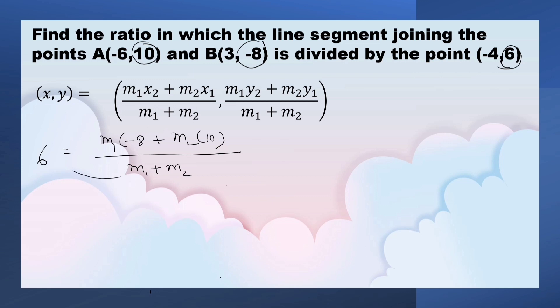Now, let us transpose M1 plus M2 to this side, means let us multiply 6 and M1 plus M2. 6M1 plus 6M2 is equal to, minus 8 into M1 is negative 8M1, 10 into M2, 10M2.